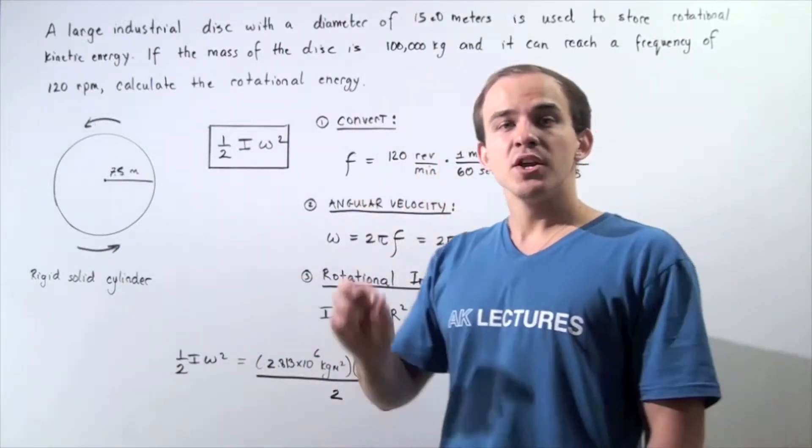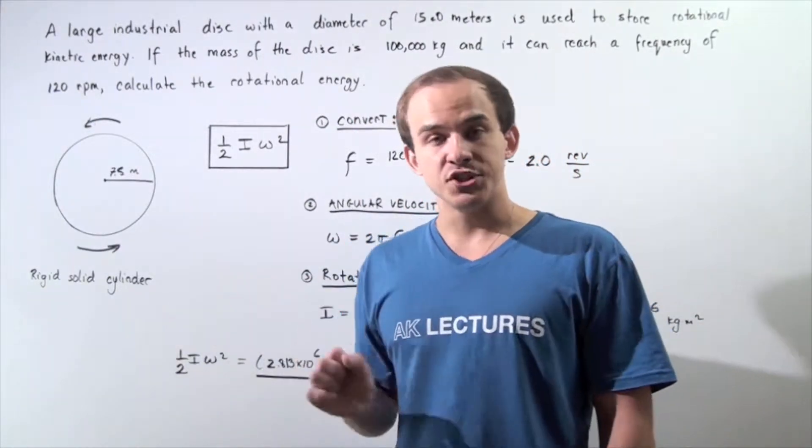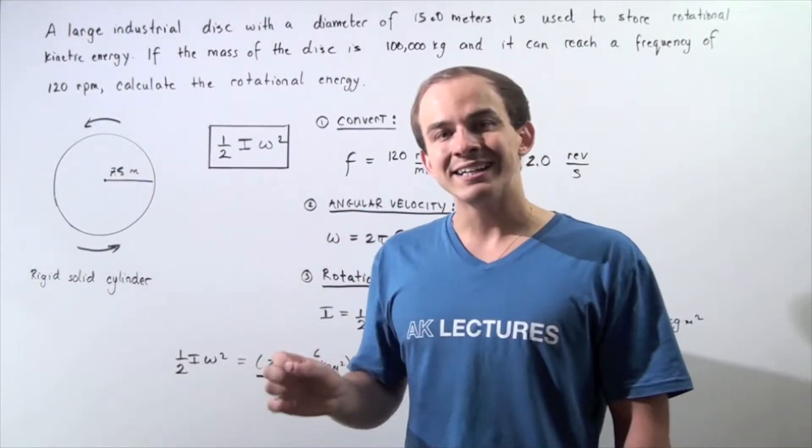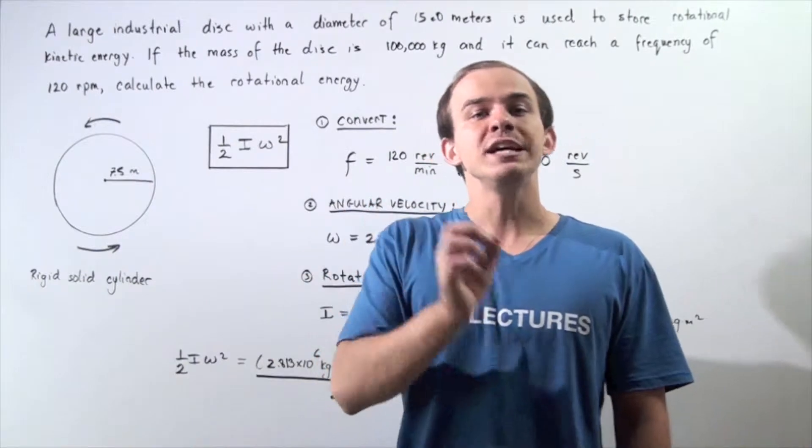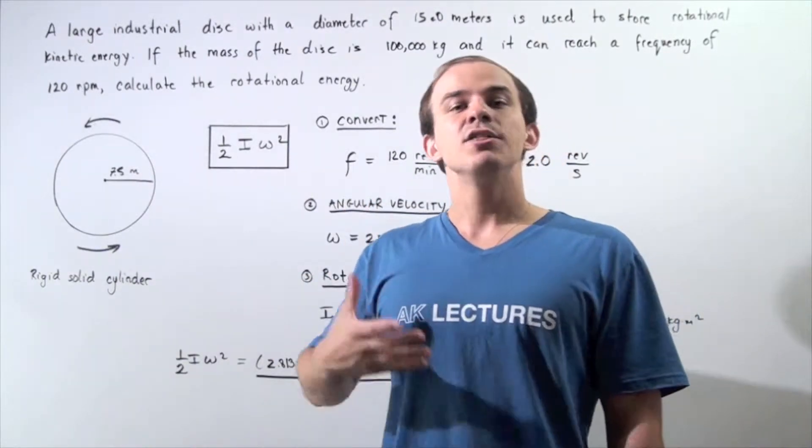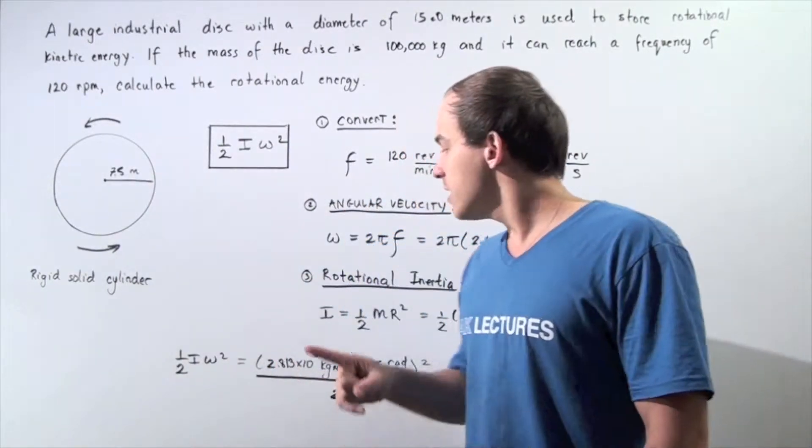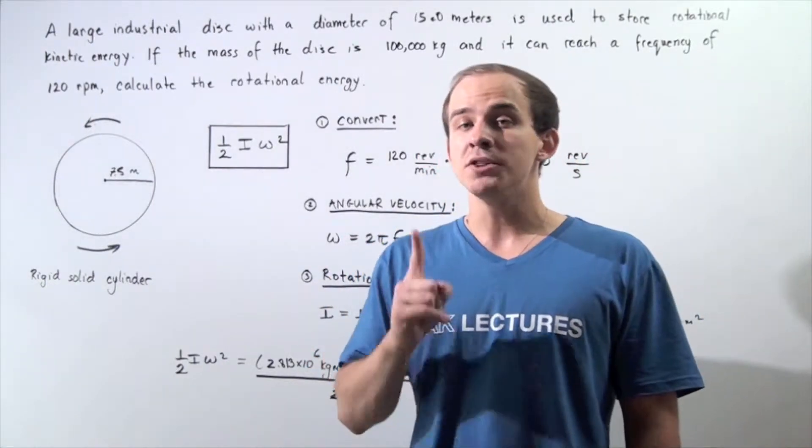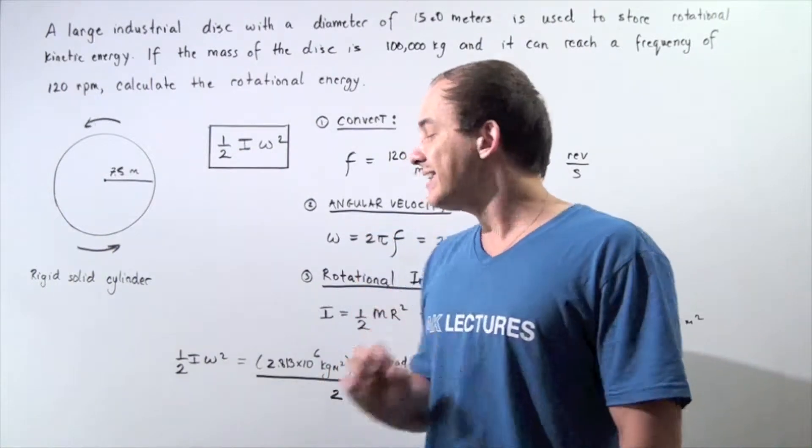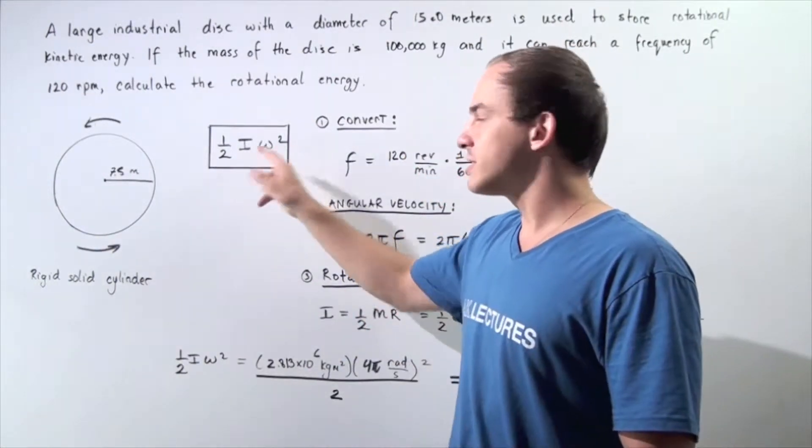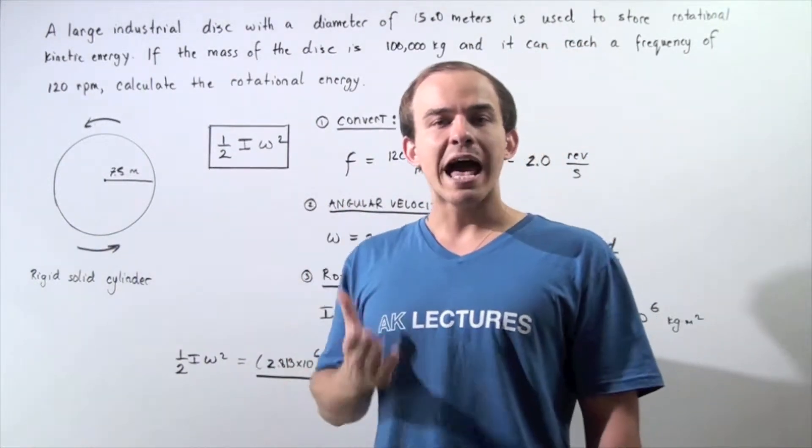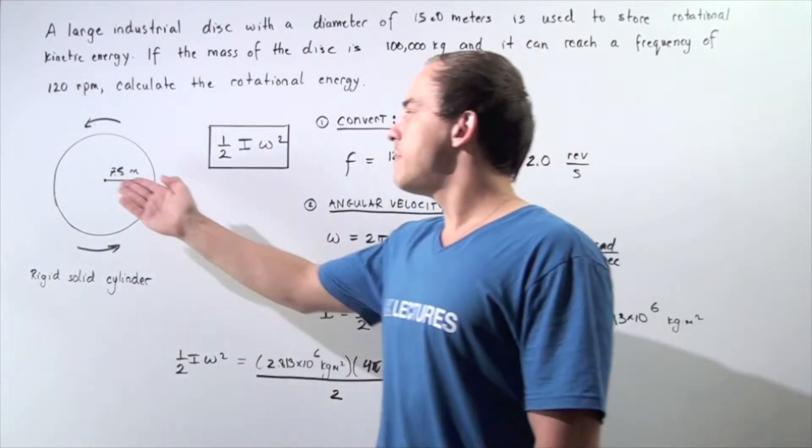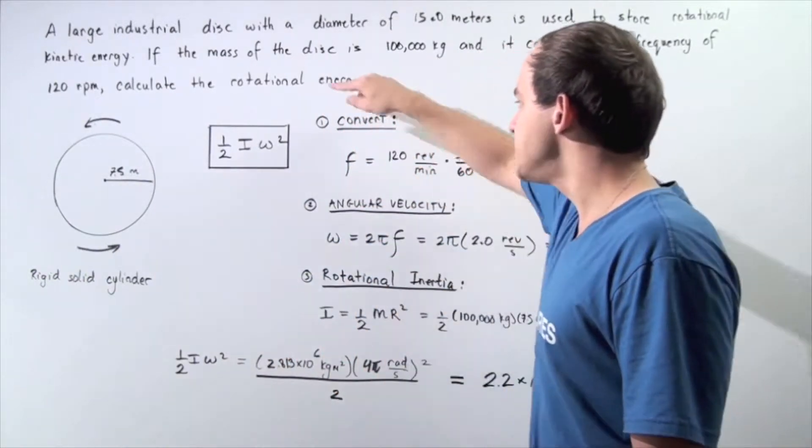So in the first step, we have to convert frequency from revolutions per minute to revolutions per second. Then in the second step, we can use the frequency to calculate the angular velocity. In the third step, we calculate the rotational inertia or the moment of inertia of the object. And in the final step, we use this equation to solve for our kinetic energy of the rotating object that is rotating about a fixed axis. So, let's begin.